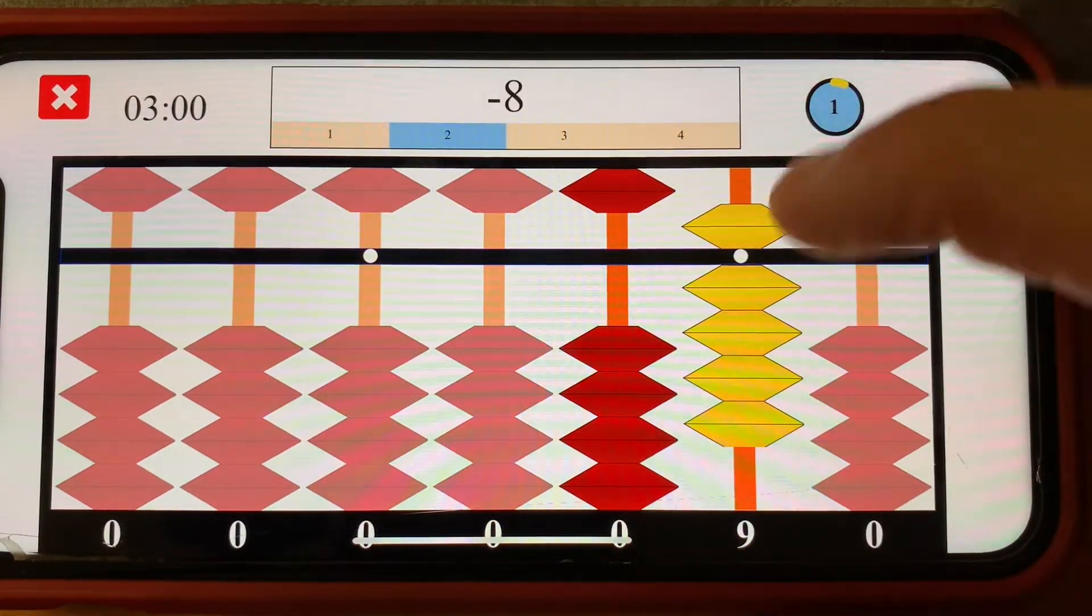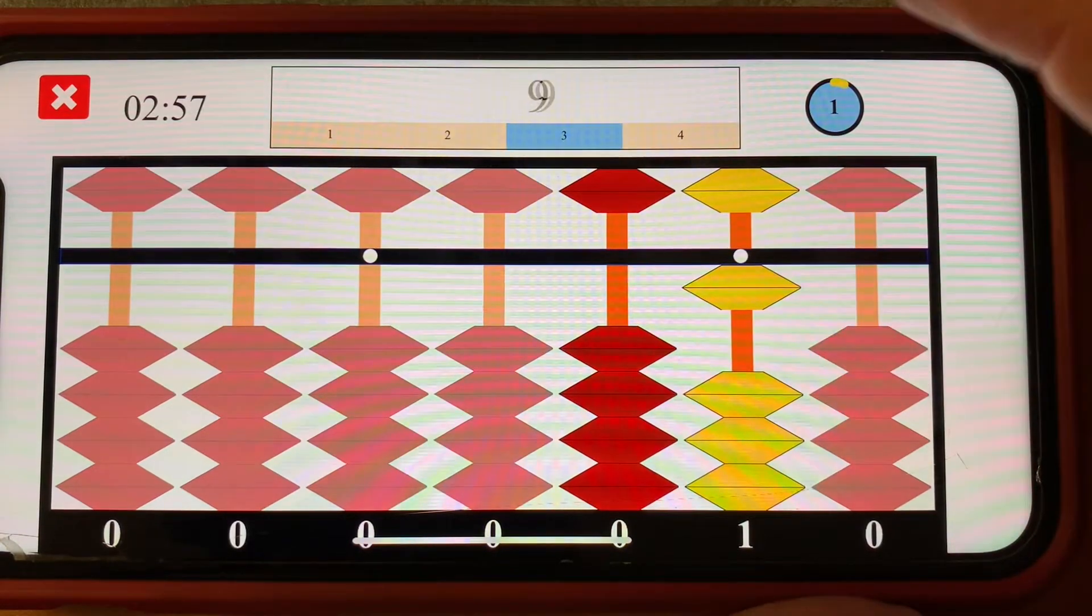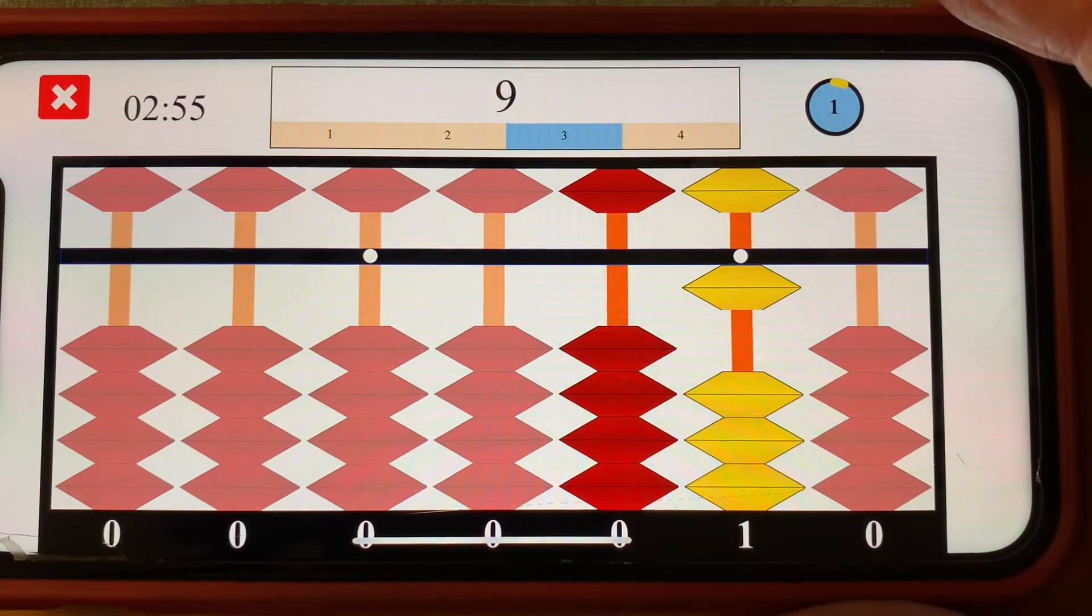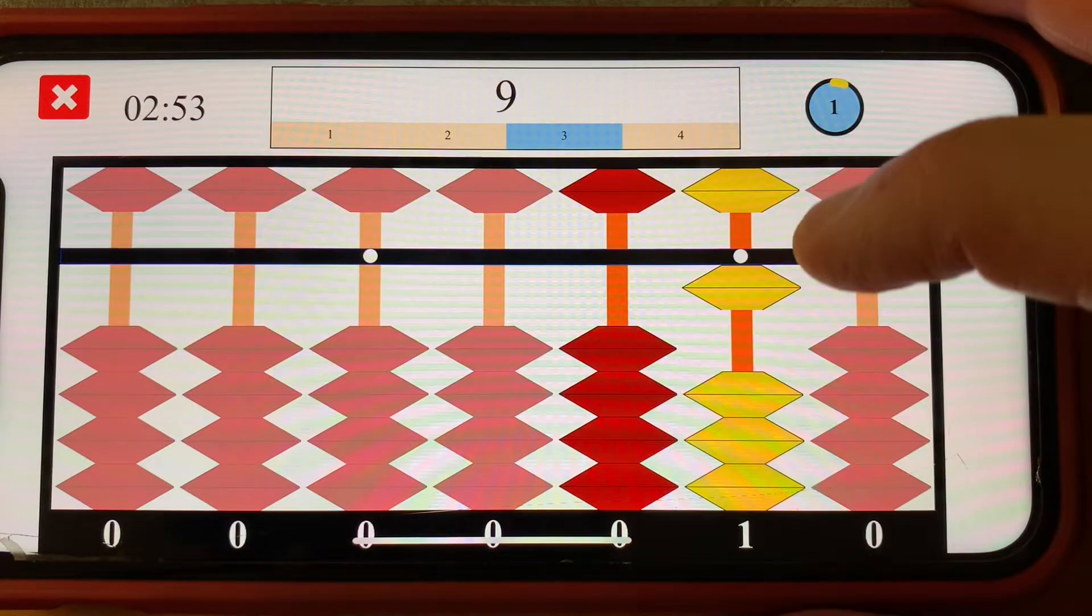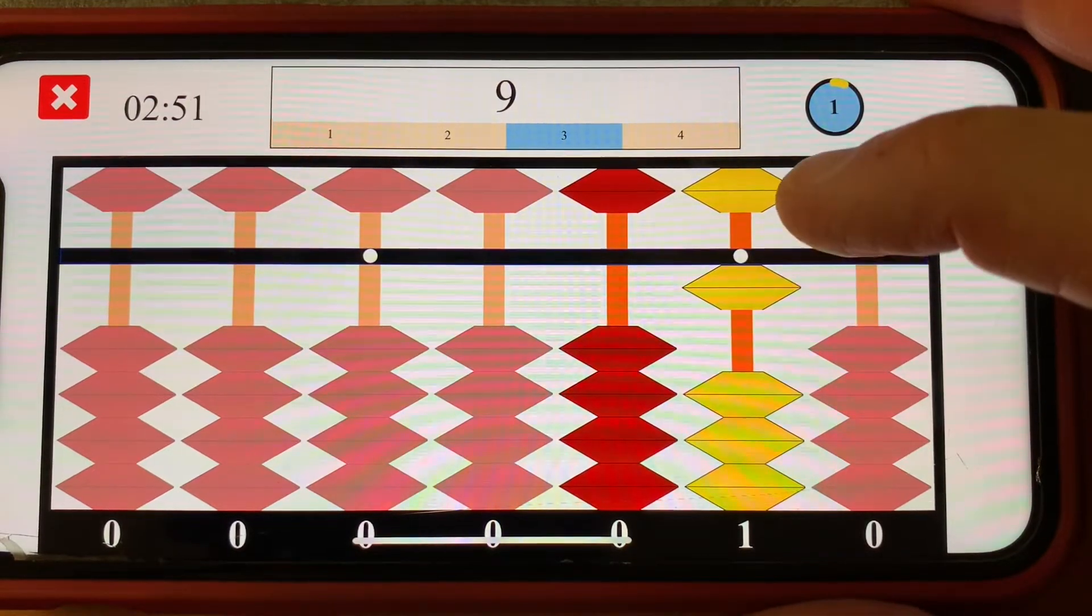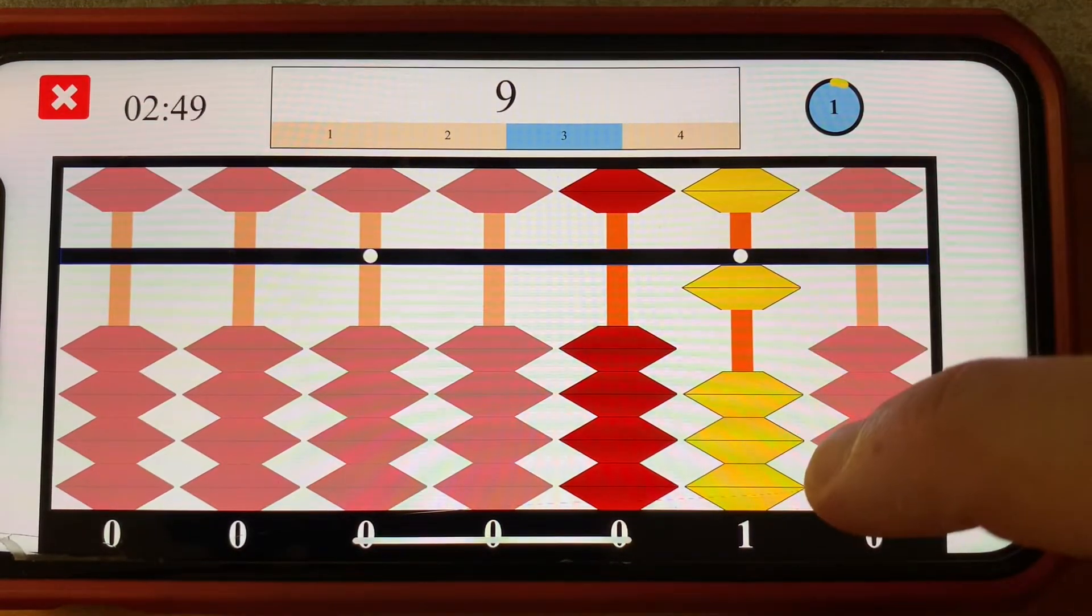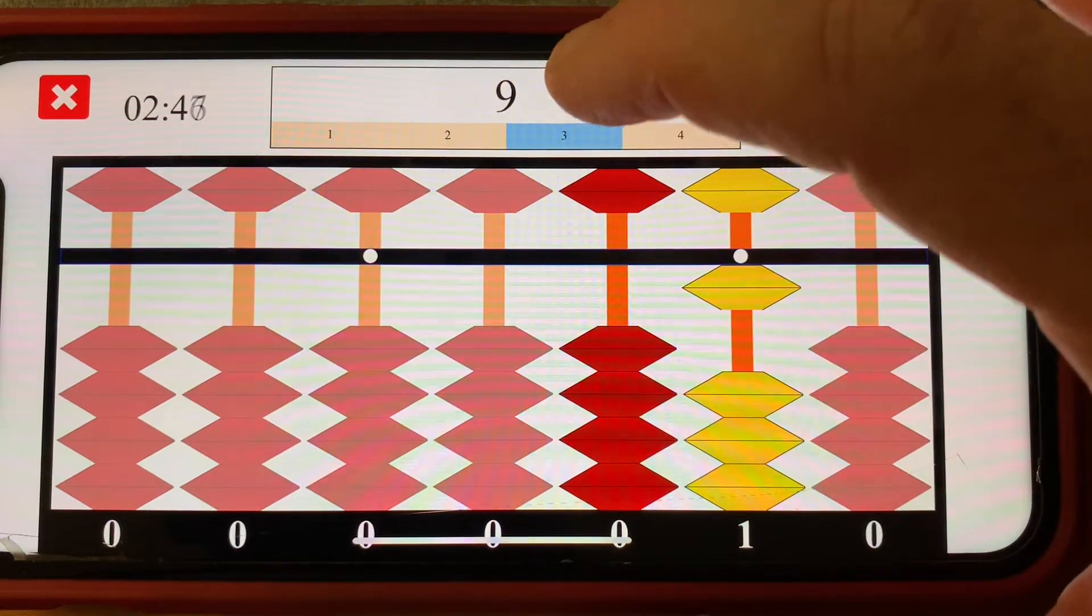Let's start a second problem with 9. I'm going to subtract 8, and now I want to add 9. Well, to add 9 to 1, you can see I only have 8 beads available, which is not enough to add 9.